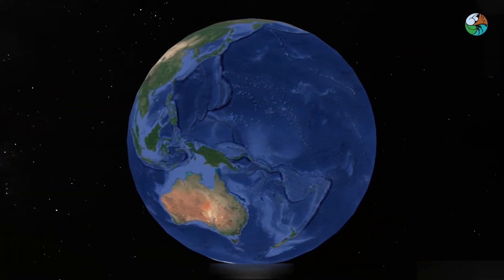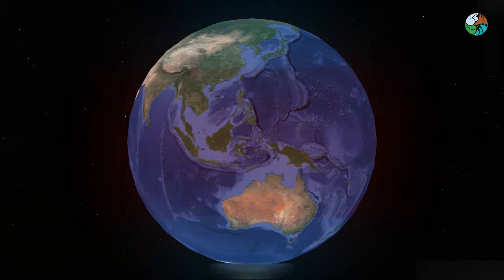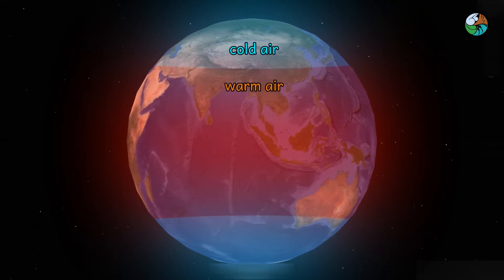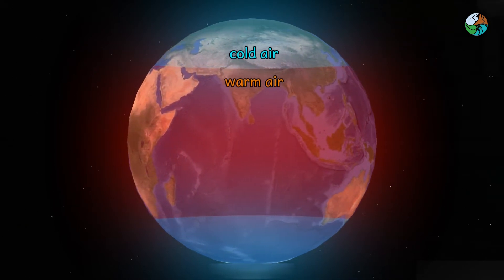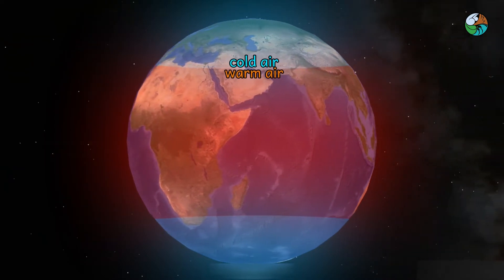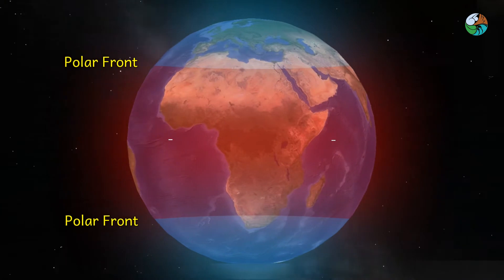In the atmosphere, air at different latitudes have different temperatures. When cold polar air and warm tropical air meet at mid-latitudes, the transition is not gradual but often abrupt. In this experiment, we are going to study this sharp temperature gradient known as the polar front.